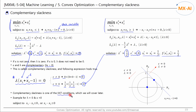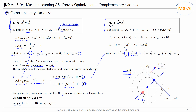The complementary slackness is one of the KKT conditions that we will cover later. Let's look at the figure on the right. This straight line is the constraint. If the feasible region is to the right of the line, the epsilon is zero and the lambda is non-zero. If the feasible region is to the left of this line, the epsilon is non-zero and the lambda is zero. Both the lambda and the epsilon can be zero — this is the case when the constraint is x1 equals x2, a straight line passing through the origin. The optimal solution is the origin, and both epsilon and lambda are zero.